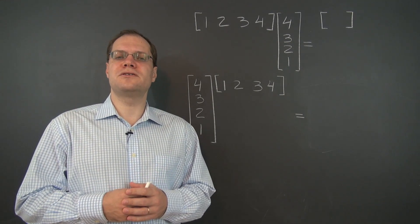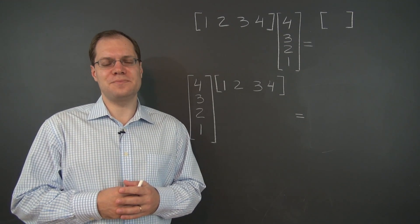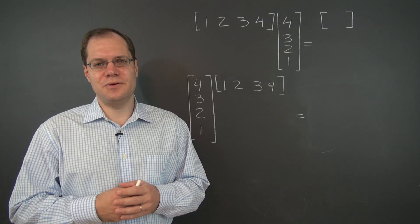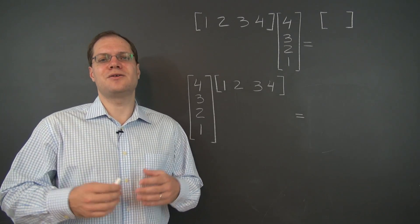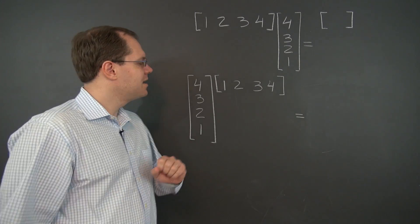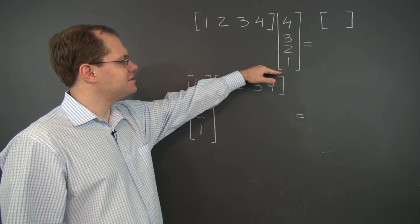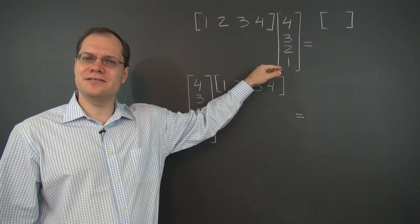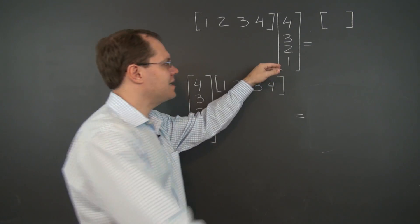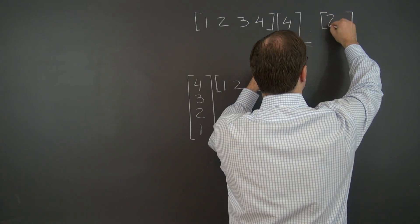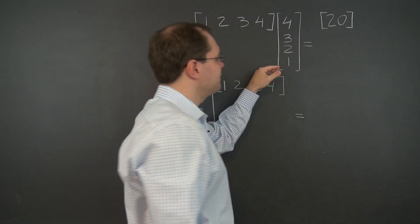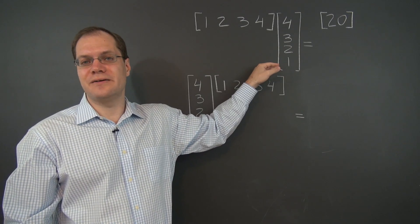This video is devoted to several matrix multiplication examples. Matrix multiplication doesn't need to be boring, so I'll certainly try to make it as interesting as possible. First is this example we've already considered, and the answer is a 1 by 1 matrix, and the only value in that matrix is 20.